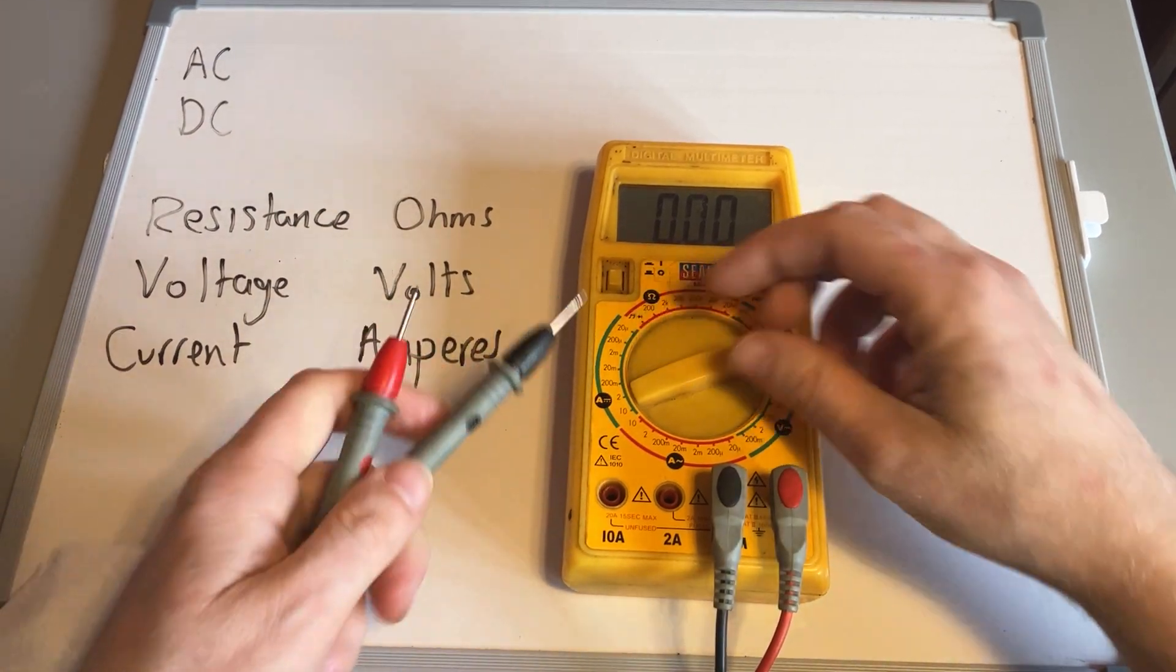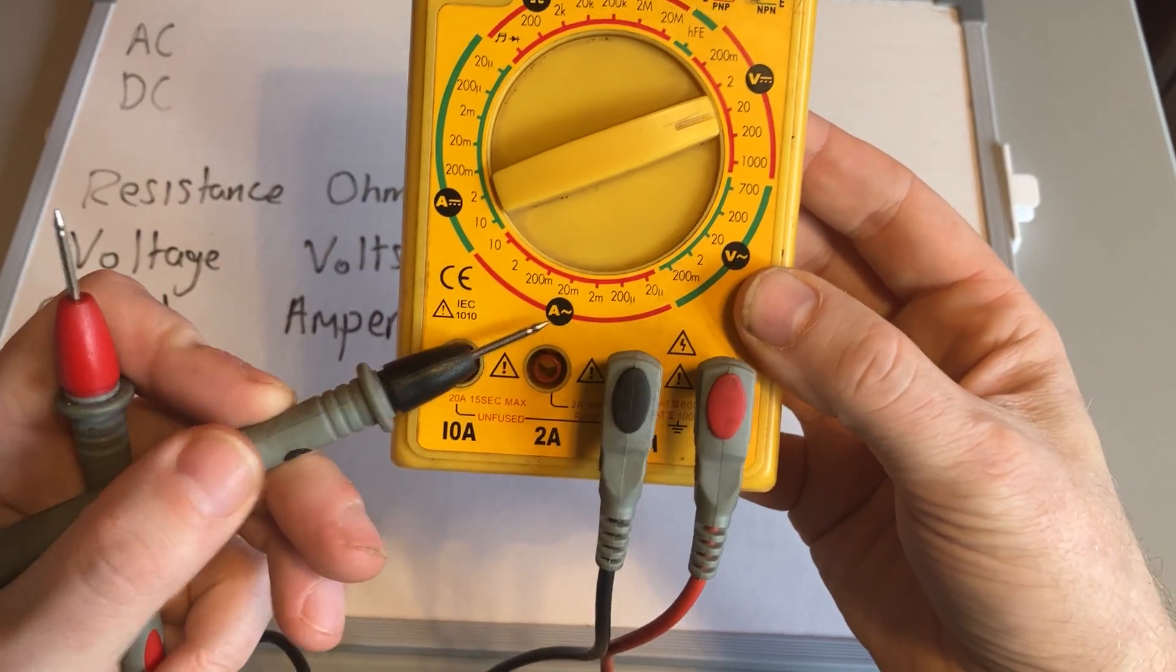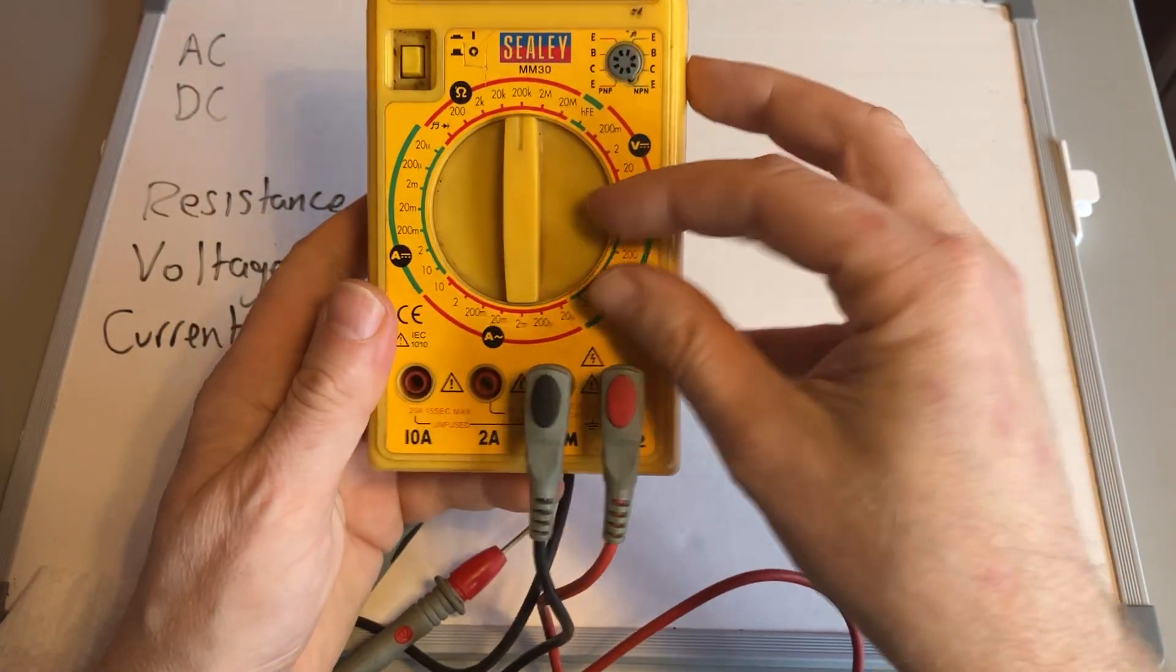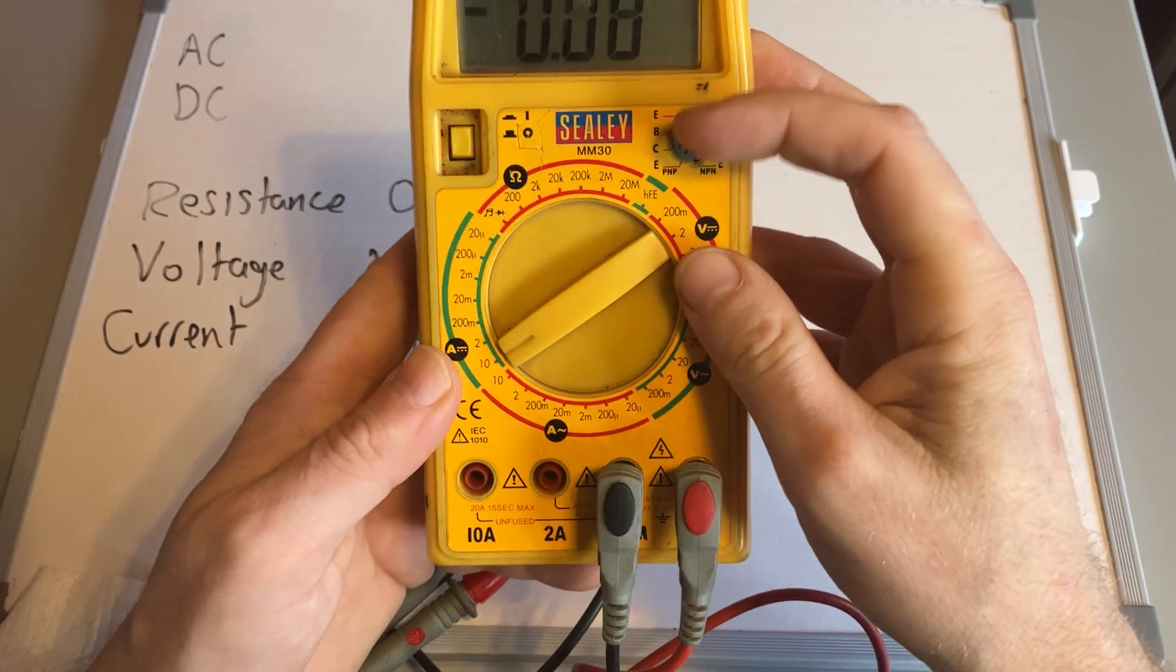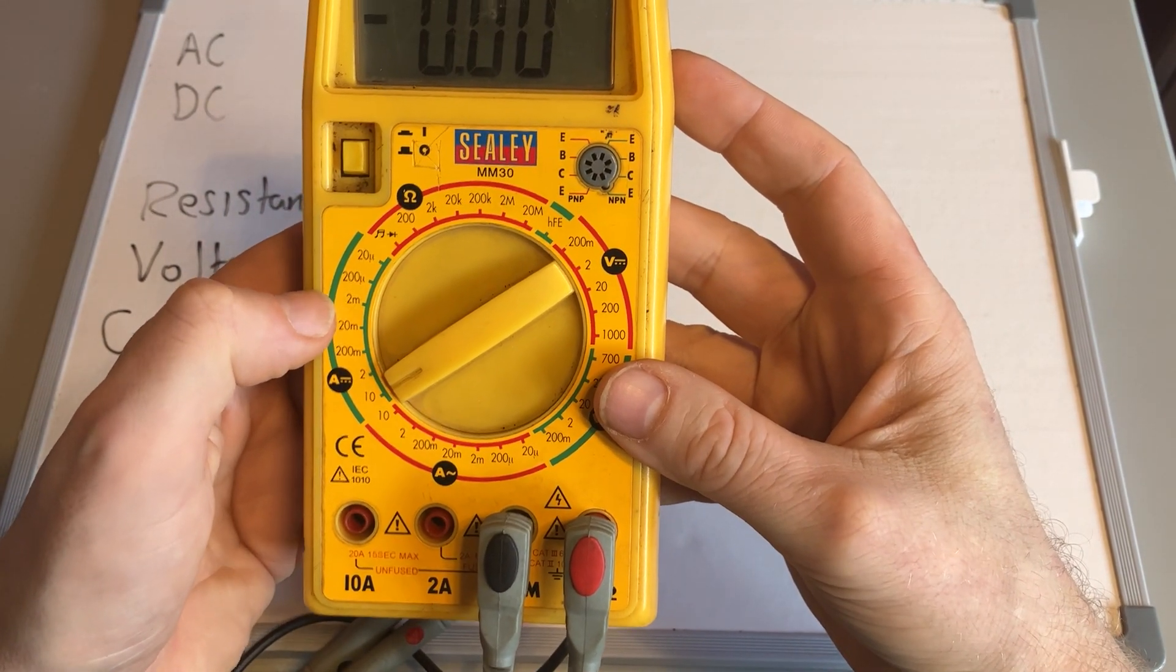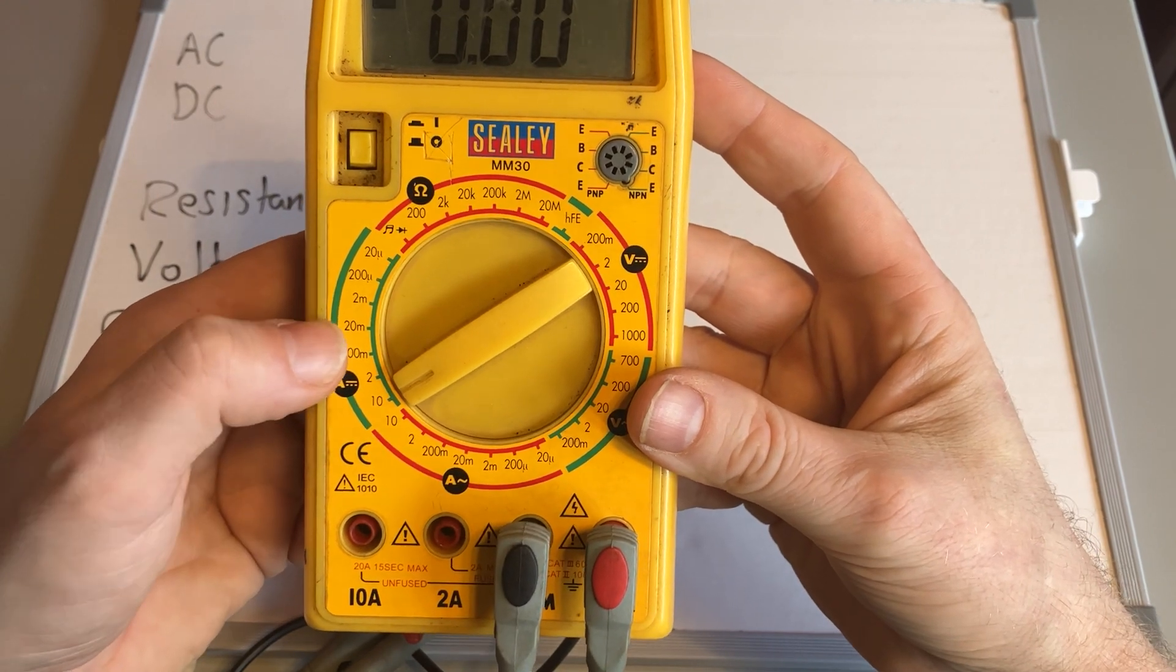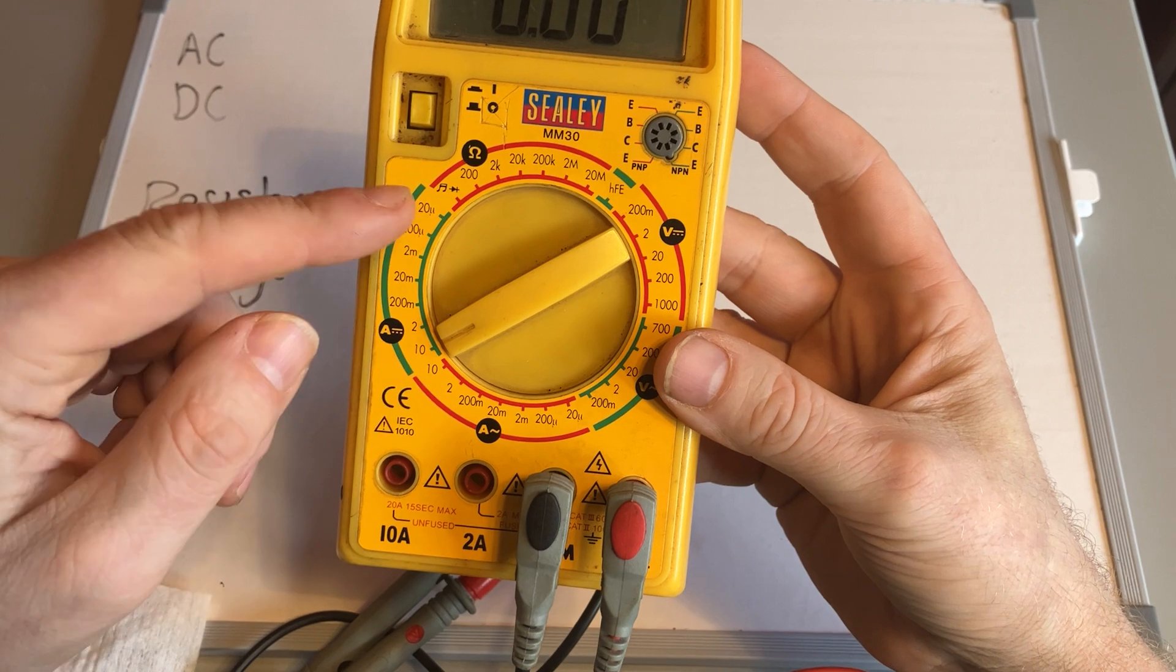That's the voltage test. Again, start at the top and work down like I keep saying. And the last one is amps. Again, you've got a DC and an AC, so depending on where you are and what you're doing, that will determine which of those settings you put it on. On this particular one, I'll do DC because DC amps is what I'd be using in a car. You've got 10, you've got two, and you've got milliamps and then micro amps.